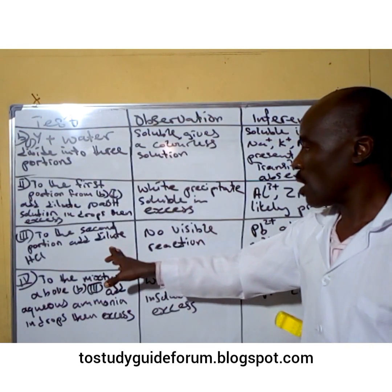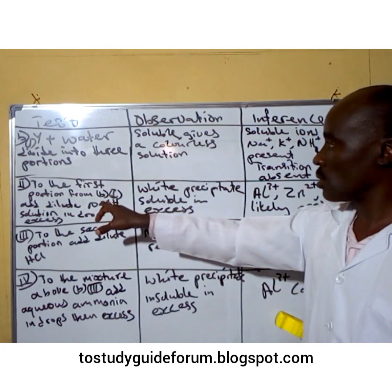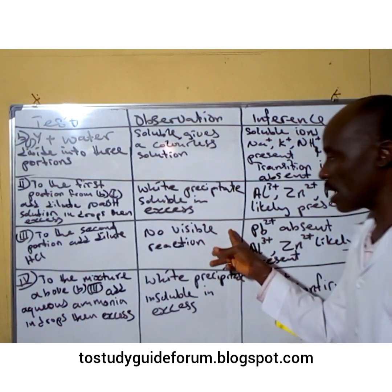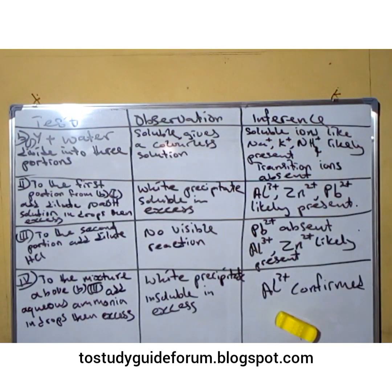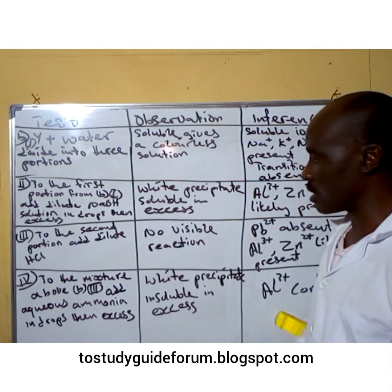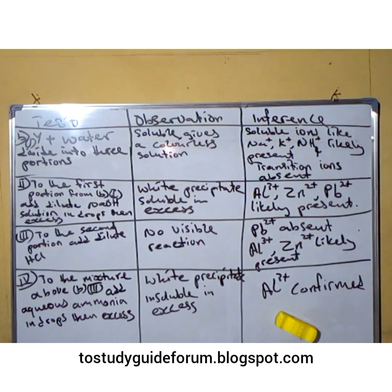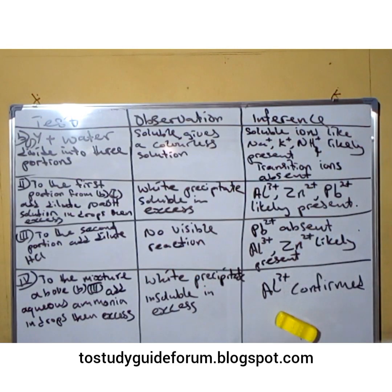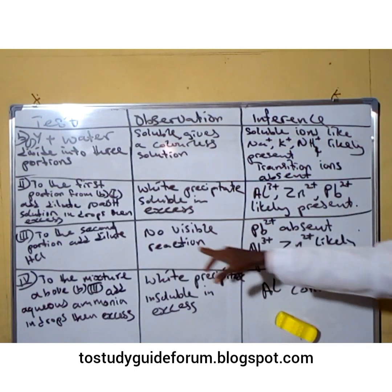To the second portion, we add dilute hydrochloric acid. We notice there is no visible reaction — the solution remains colorless and nothing changed. This means that lead is absent, because if lead were present it would give us white precipitates which dissolve when heated or warmed, but remain when cold.